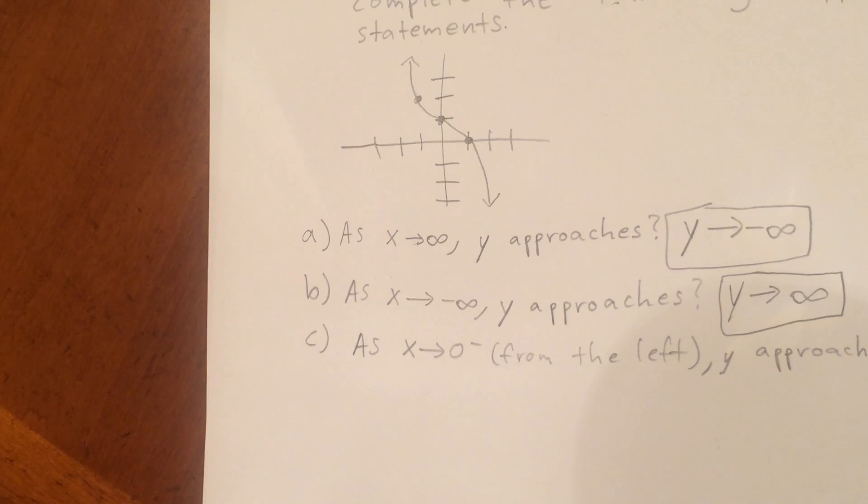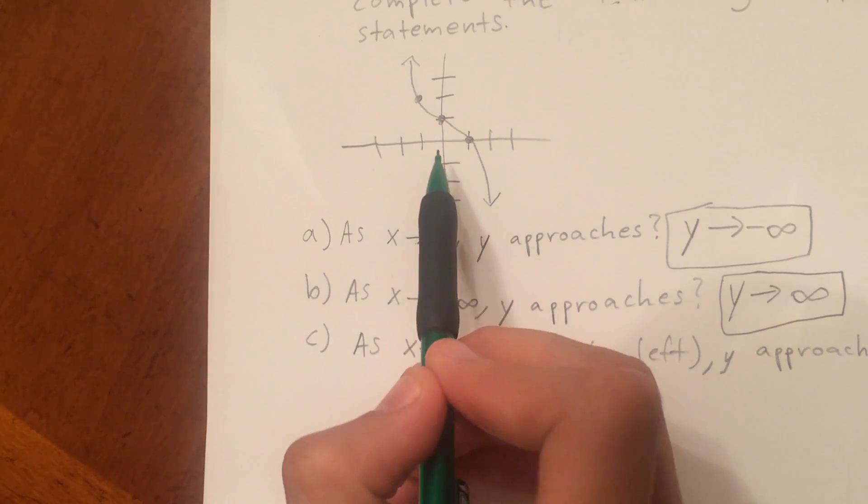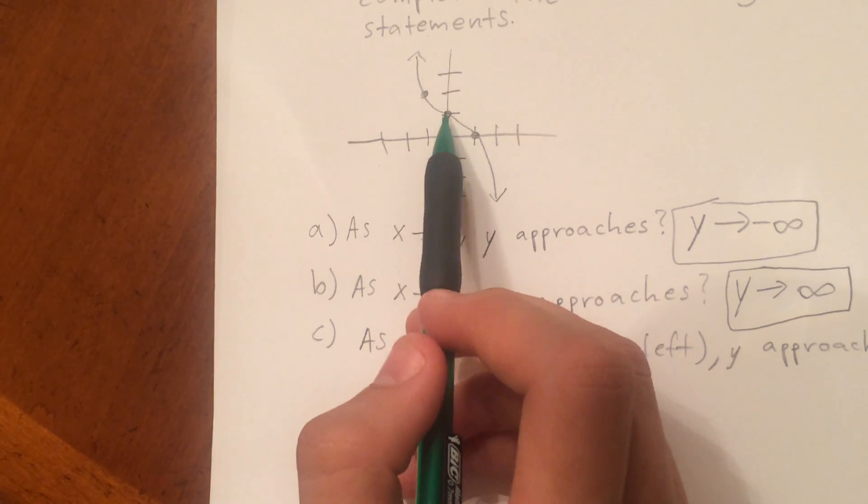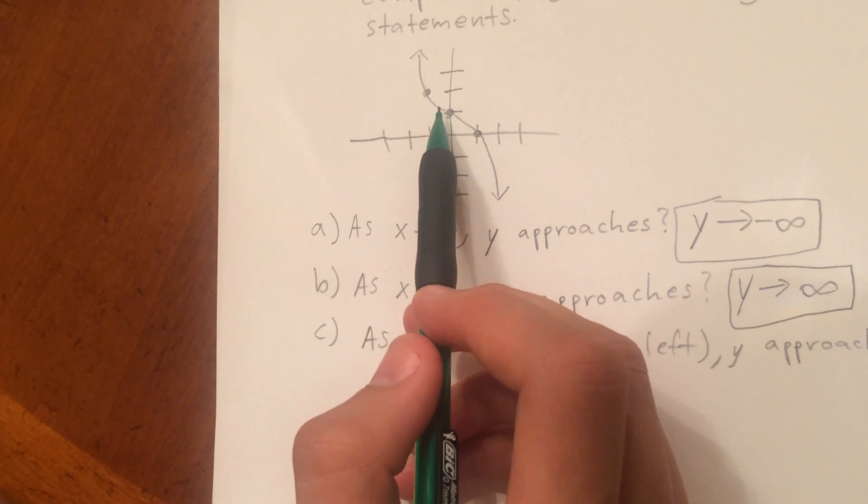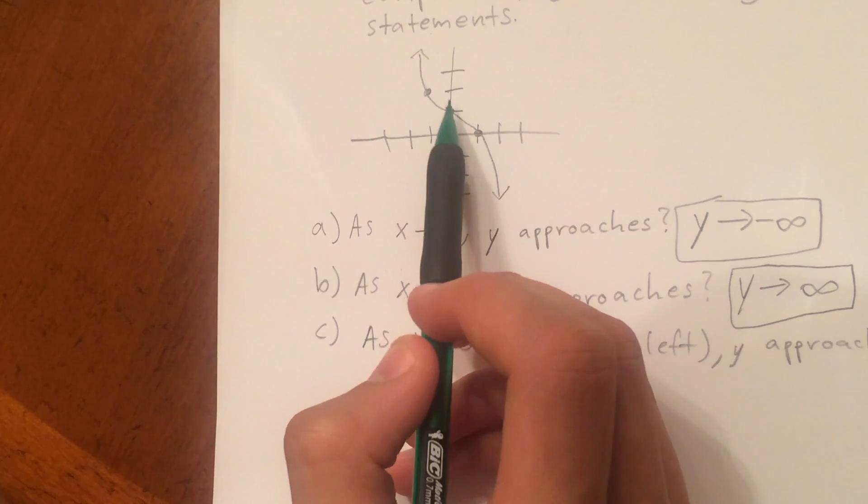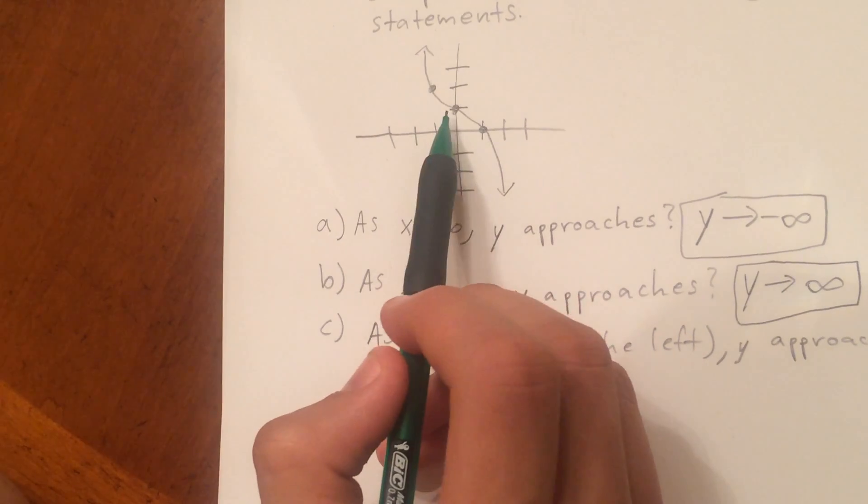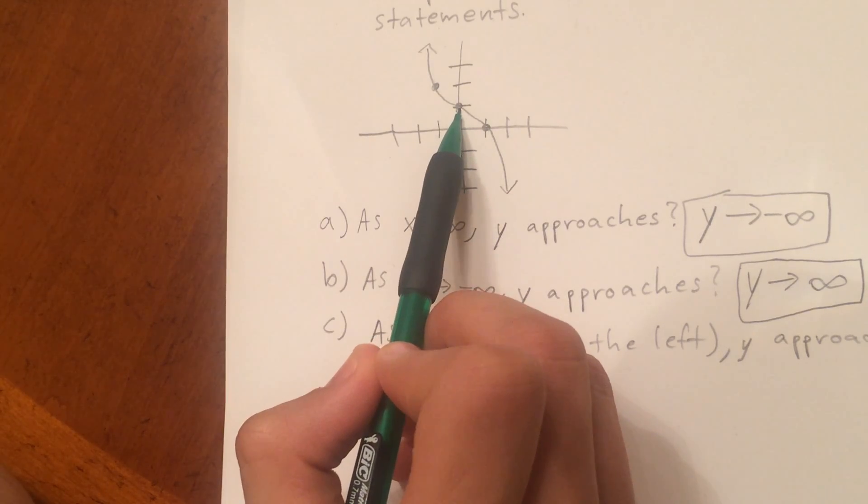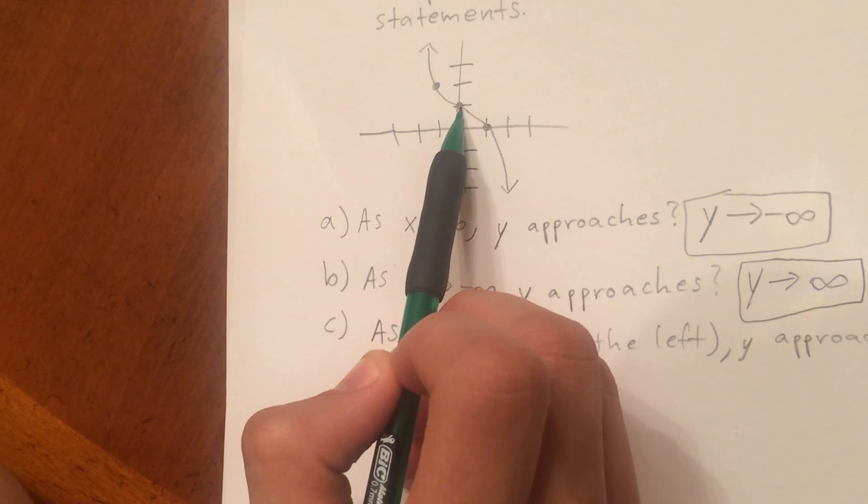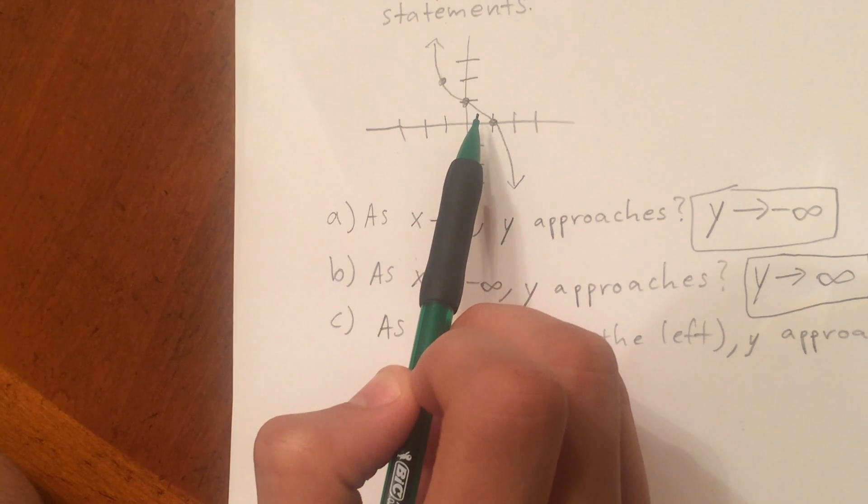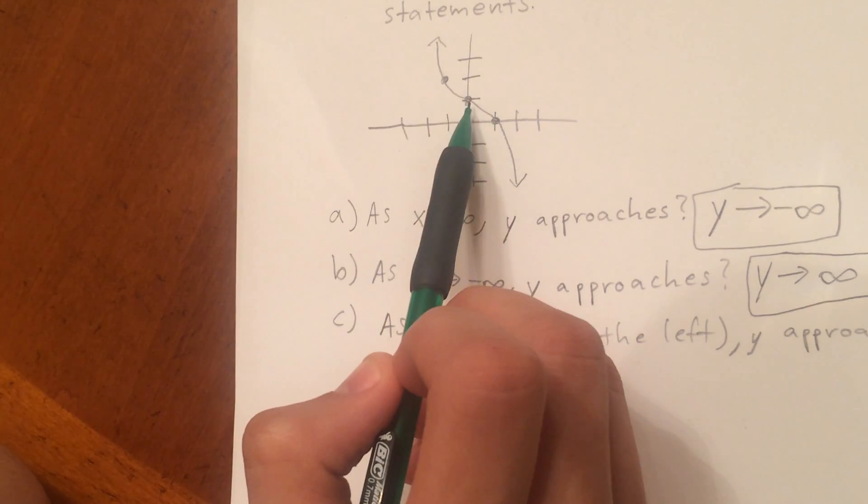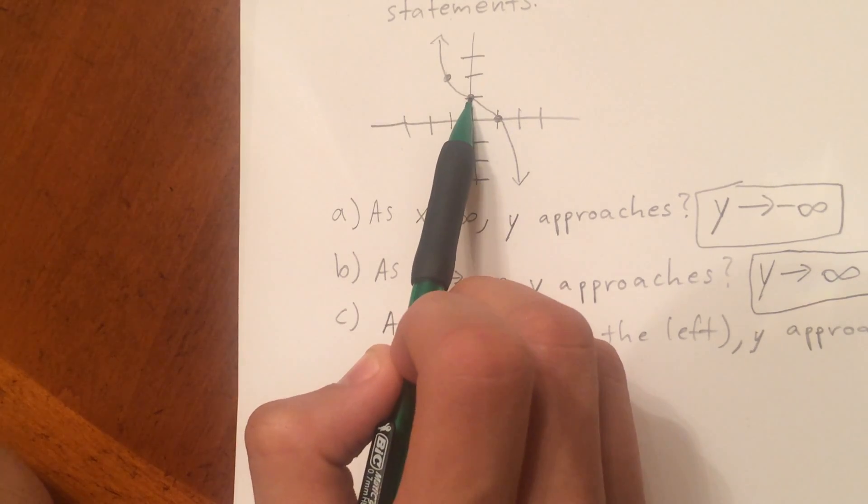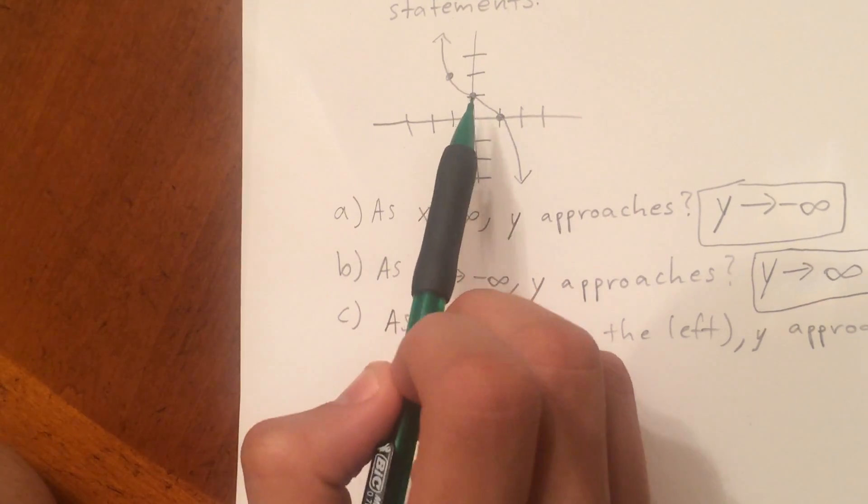As x approaches 0 from the left, clearly the y value approaches 1. This point right here, this point is defined for x equals 0. And actually, it would be the same if x were approaching from the right, they both, the y approaches this point right here, which is 1.